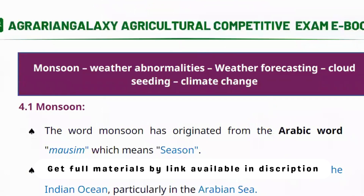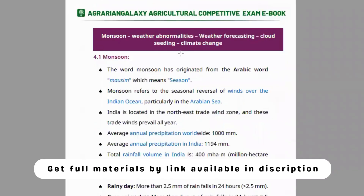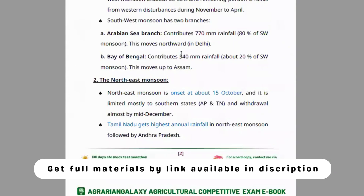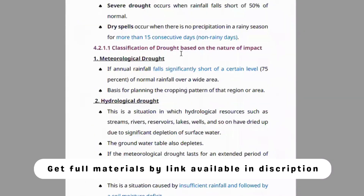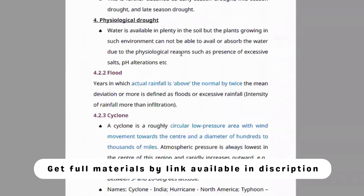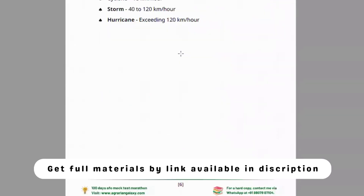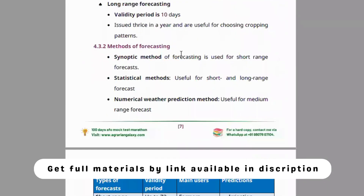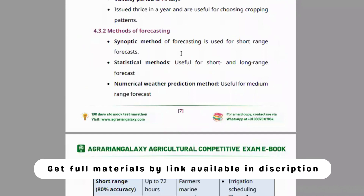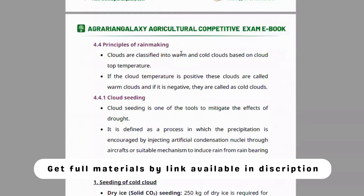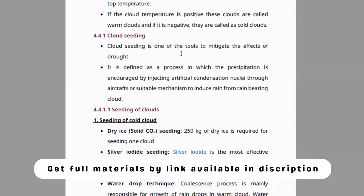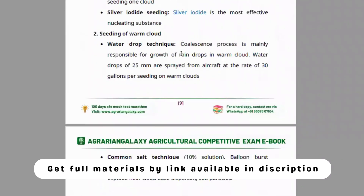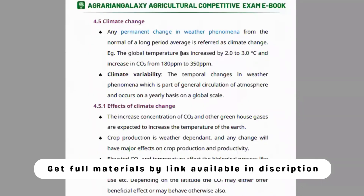Module five is all about monsoon, weather abnormalities, weather forecasting, cloud seeding, and climate. Topics include types of monsoon, drought and its types, flood, cyclone, and weather forecasting methods — short range, medium range, long range, synoptic, statistical, and numerical weather prediction. Rain-making principles are covered: cold cloud technique, water drop technique, and common salt technique.